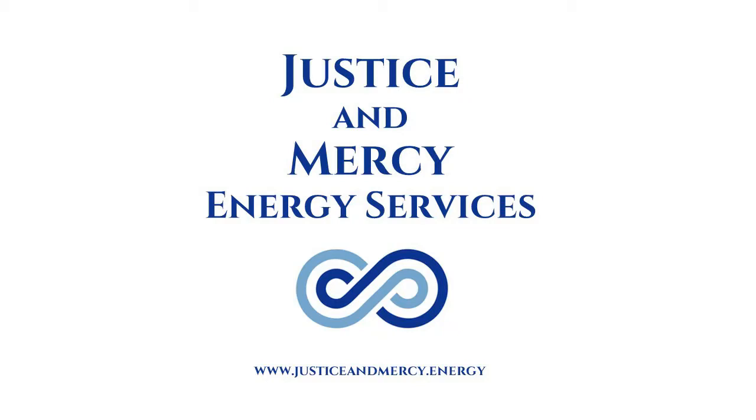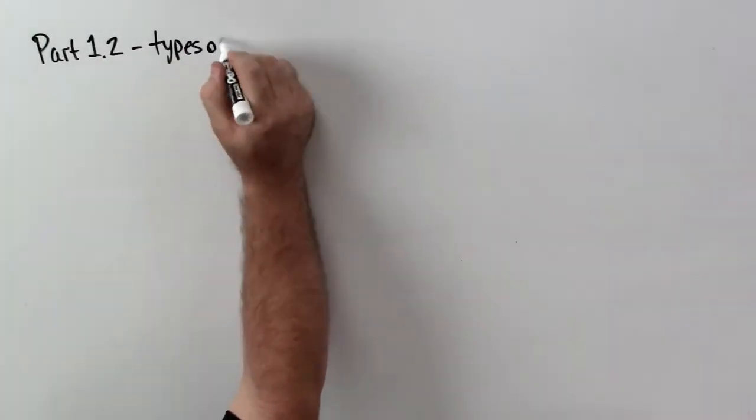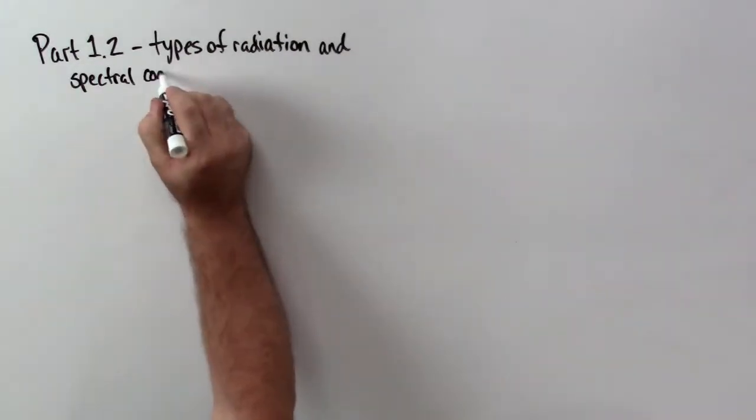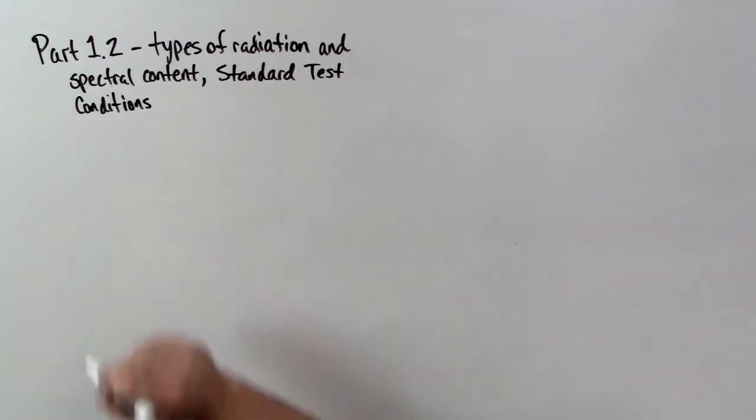This is the Justice and Mercy Energy Services video on different types of solar radiation. This is video part 1.2, which will be about different types of radiation, the spectral content of that radiation, and what we call standard test conditions.